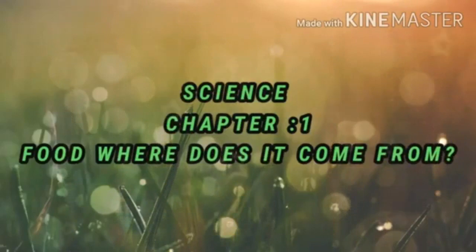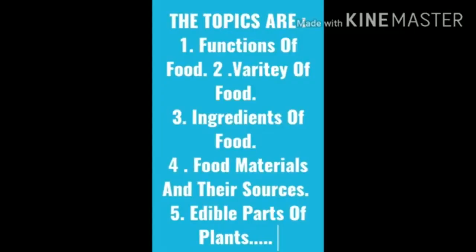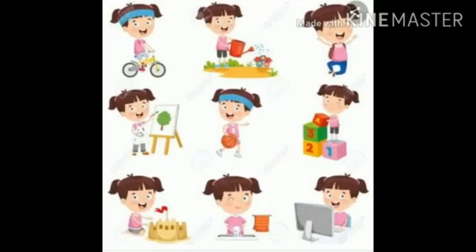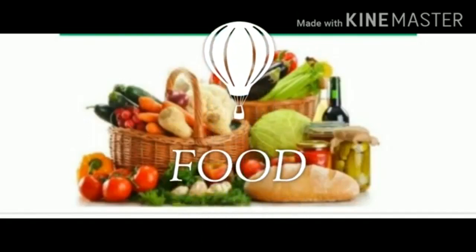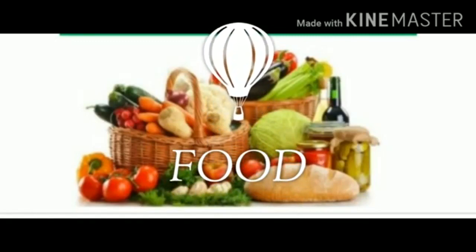In our first class we clearly discussed the following topics: functions of food, variety of food, ingredients of food, food materials and their sources, and edible parts of plants. All living organisms need food to survive and perform different activities. What is meant by food? Anything that organisms eat or drink for their survival.